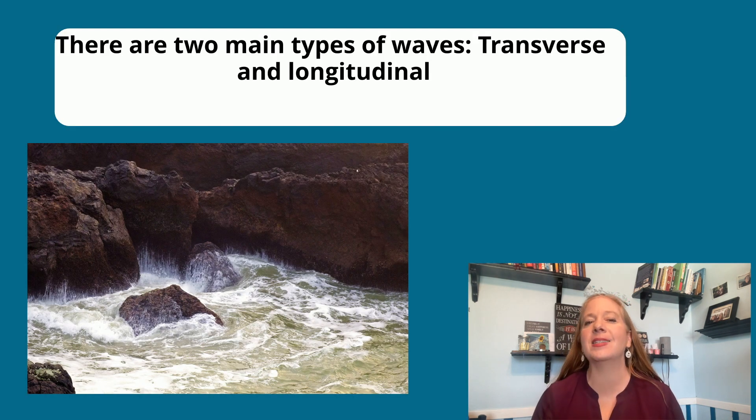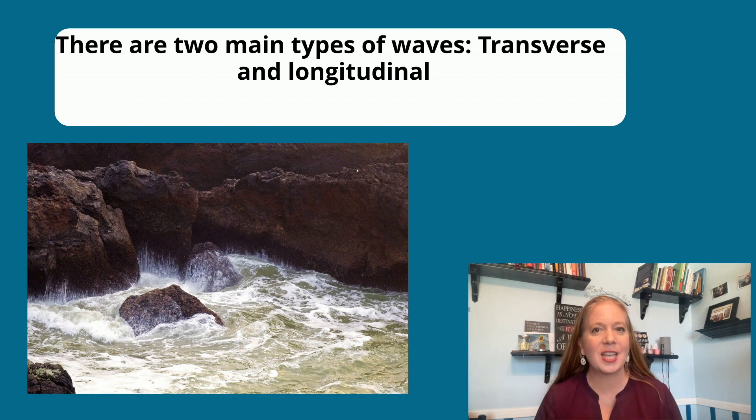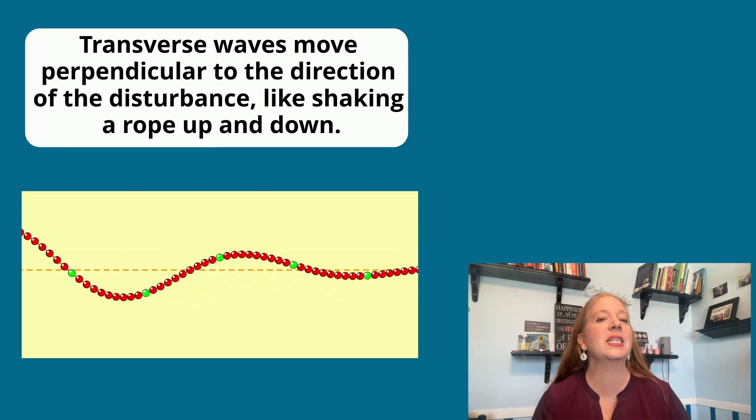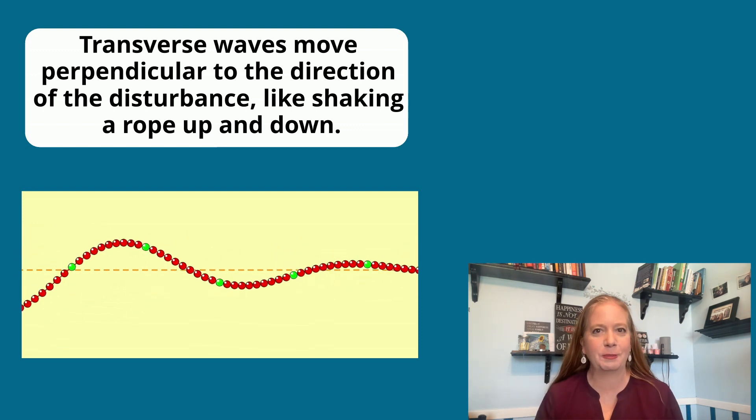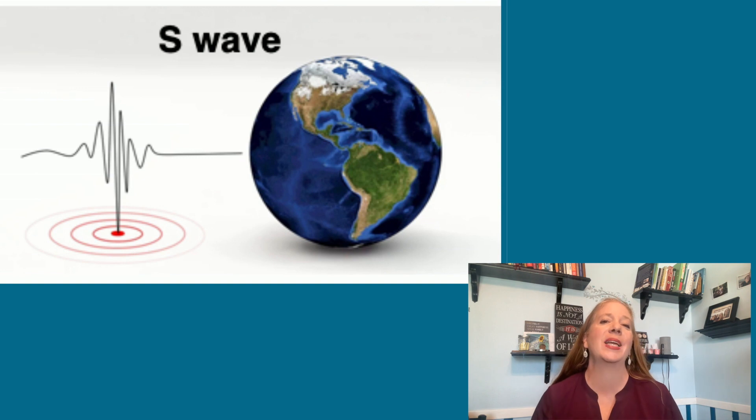There are two main types of waves, transverse and longitudinal. Transverse waves move perpendicular to the direction of the disturbance, like shaking a rope up and down. Light waves and earthquake S waves are types of transverse waves.